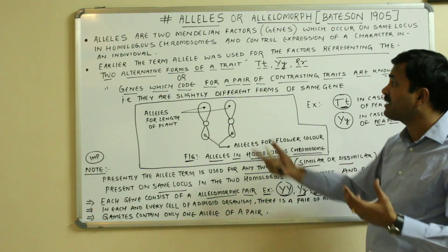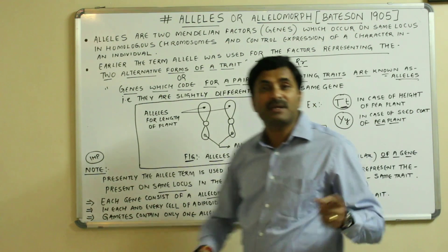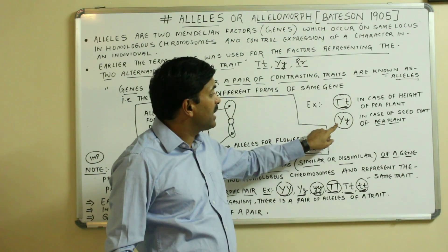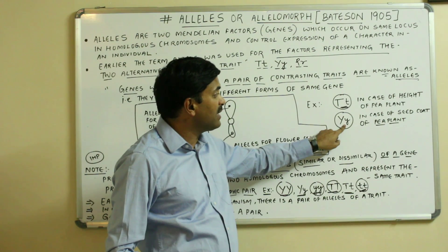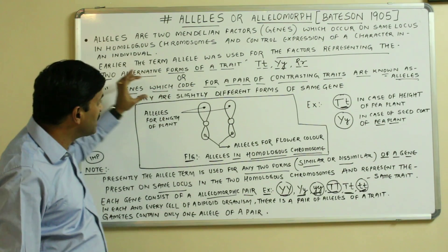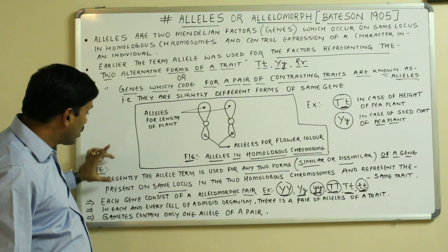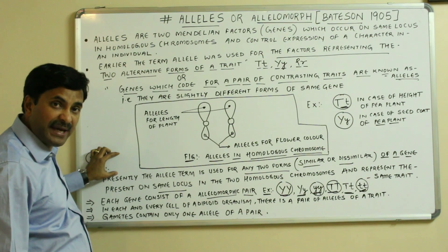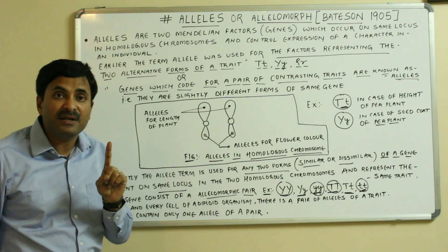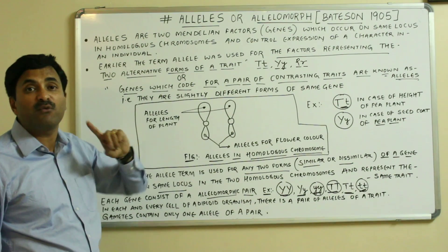Alleles are slightly different forms of the same gene. For example, capital T and small t is an allele for the height of the pea plant, and capital Y and small y is an allele for the seed coat of the pea plant. But these definitions were used earlier. Now, it is not necessary that alleles always represent a pair of contrasting traits.